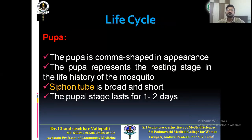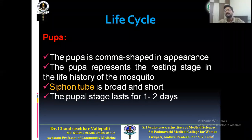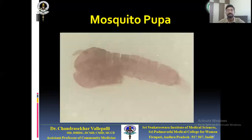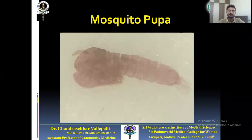The Anopheles pupa is comma-shaped and represents the resting stage. In the pupa you can observe a siphon tube, which is broad and short — compared to Culex where it is long and narrow. This pupal stage lasts 1 to 2 days. You will view the mosquito pupa slide through 20x magnification at the college.